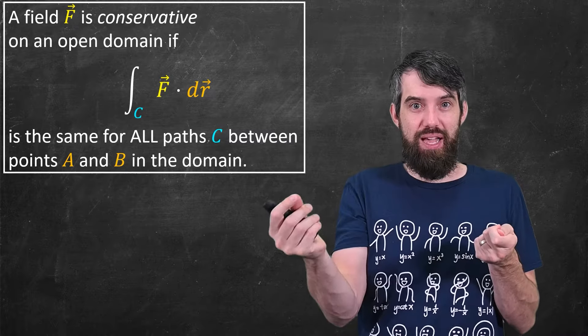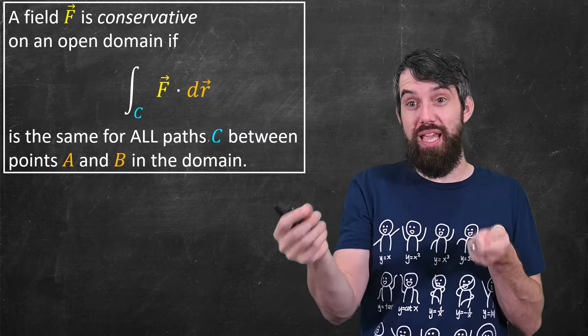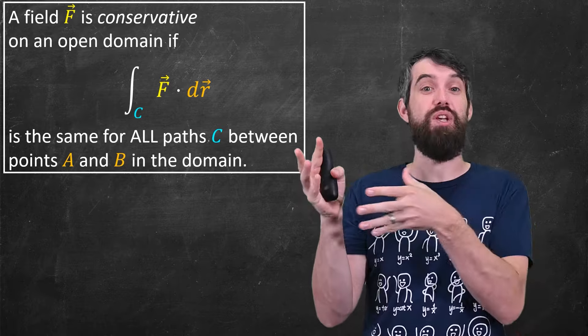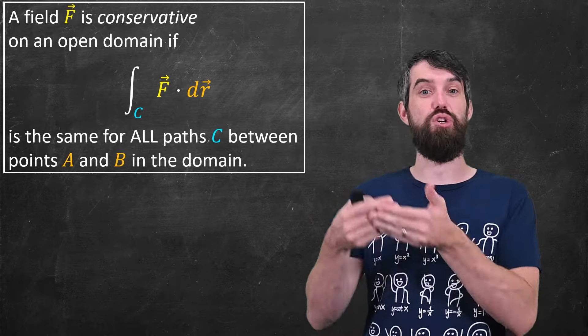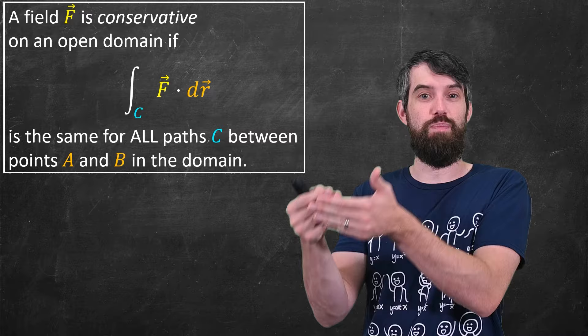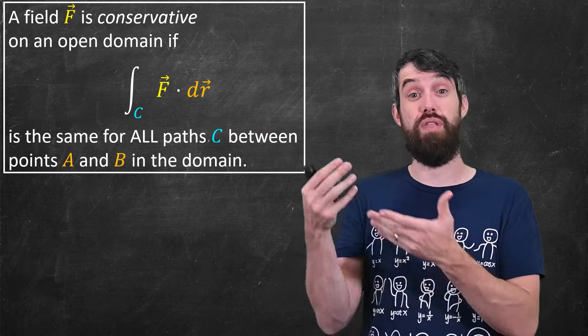So, if you fix the a and you fix the b, you can take any path that you want between the a and the b, and that line integral is going to be exactly the same. If you interpret the line integral in terms of work, that would be saying that the work is path independent, which we know it is for the force of gravity.